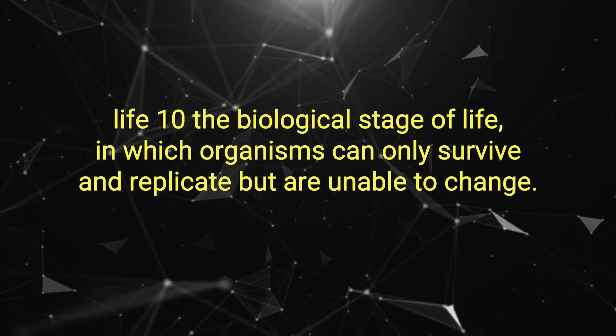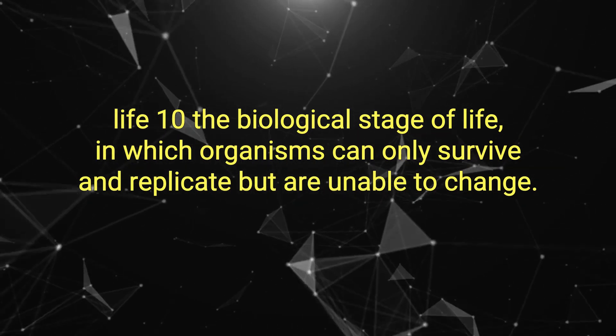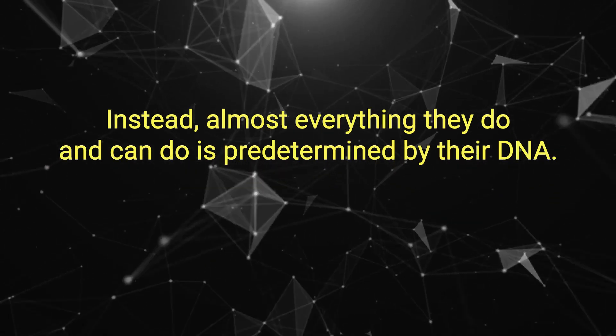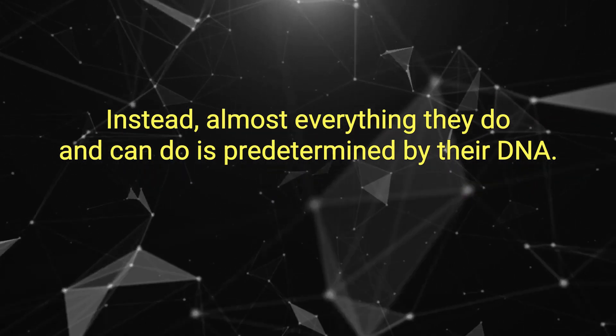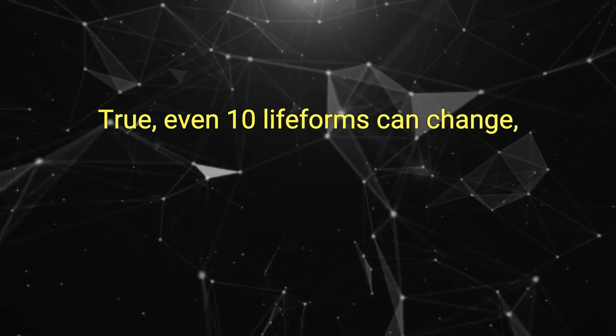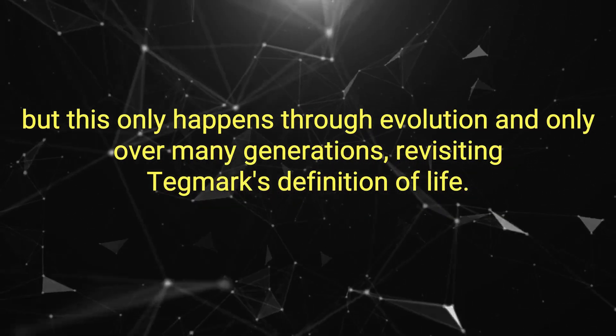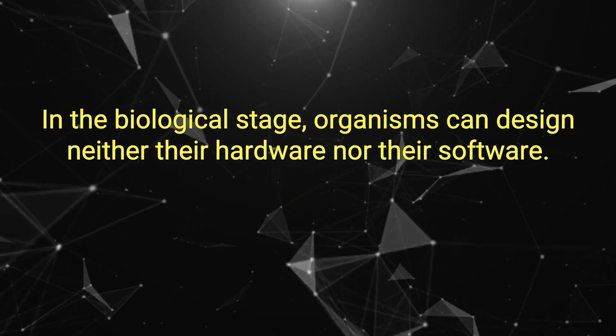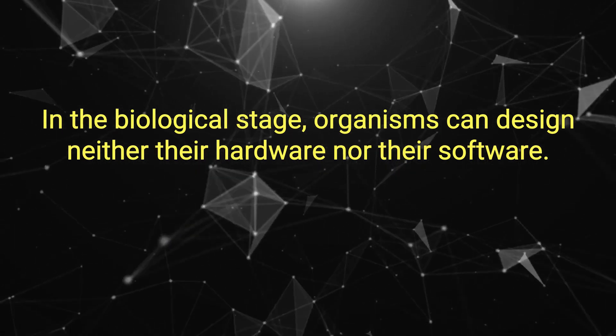Life 1.0: The biological stage of life, in which organisms can only survive and replicate but are unable to change. Instead, almost everything they do and can do is predetermined by their DNA. True, even 1.0 life forms can change, but this only happens through evolution and only over many generations. Revisiting Tegmark's definition, in the biological stage, organisms can design neither their hardware nor their software.